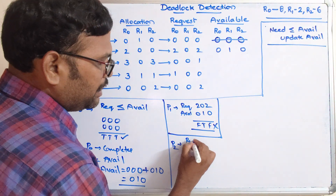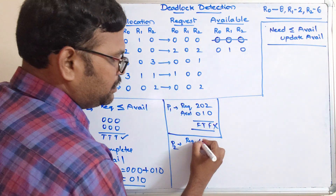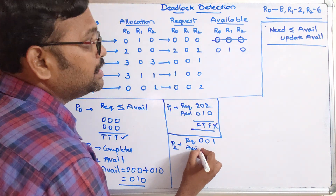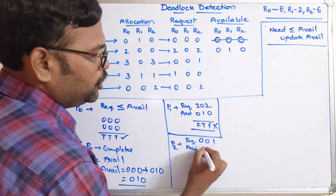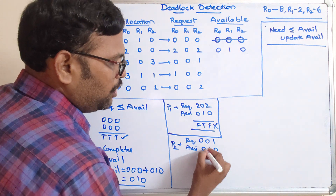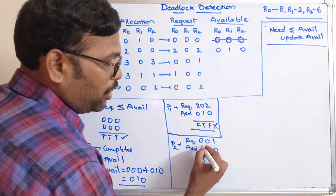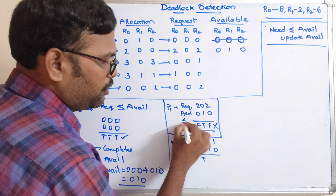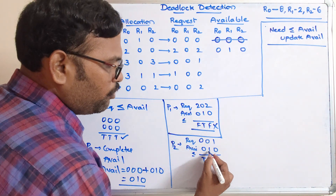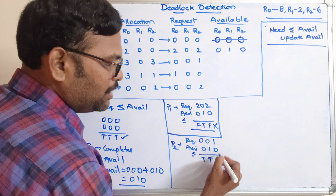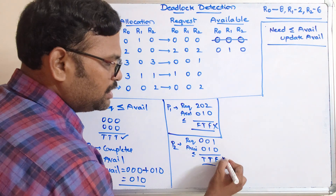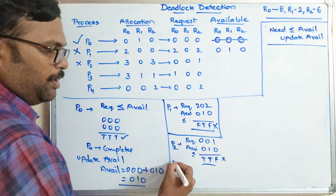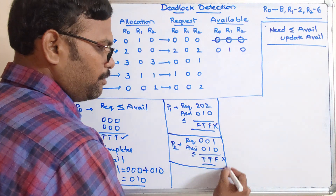Moving to P2: P2 requires 0,0,1 and available is 0,1,0. Checking: 0 ≤ 0 is true, 0 ≤ 1 is true, but 1 ≤ 0 is false. Since one condition is false, P2 also cannot complete its execution.